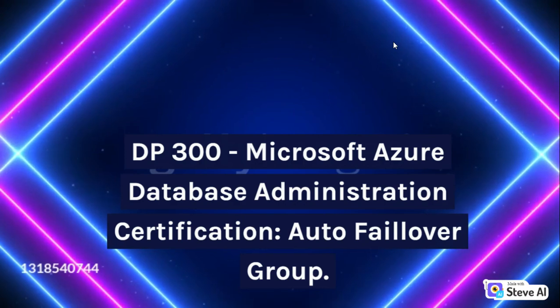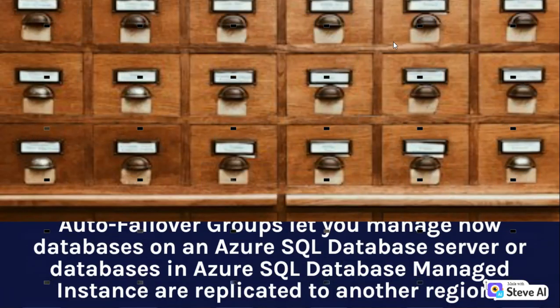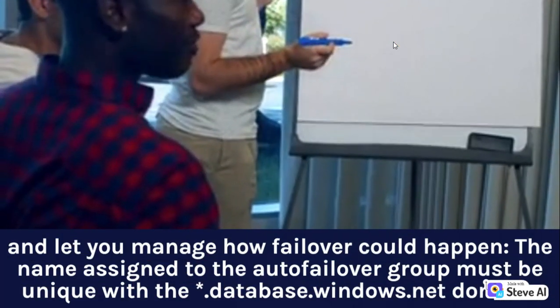DP-300, Microsoft Azure Database Administration Certification — Autofailover Group. An autofailover group is an availability feature that can be used with both Azure SQL Database and Azure SQL Database Managed Instance. Autofailover groups let you manage how databases on an Azure SQL Database Server or databases in Azure SQL Database Managed Instance are replicated to another region, and let you manage how failover could happen.